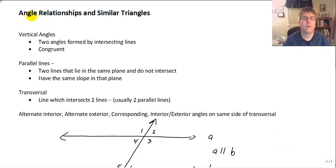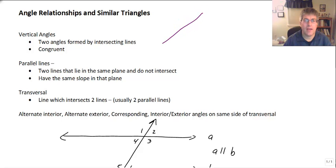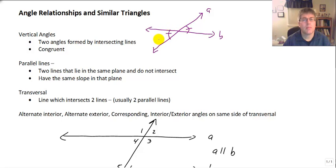Welcome back. In this video we're going to take a look at angle relationships. Vertical angles are two angles that are formed by intersecting lines. So we simply have two lines that intersect. We have lines A and B here and these two lines meet. The vertical angles — the angles opposite of each other — are always going to be congruent, and of course we denote that by the tick marks.